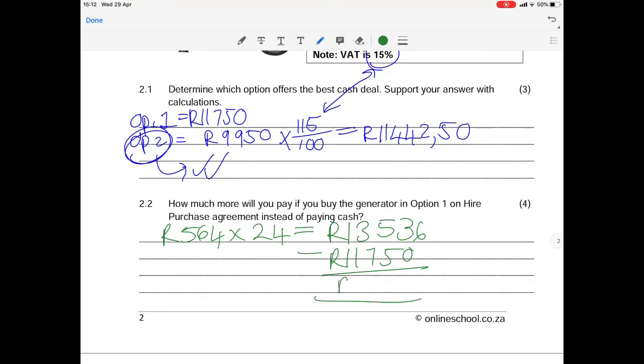We then subtract from that the cash price which is R11,750 and we get a total difference of R1,786. That is how much more we will pay on hire purchase.